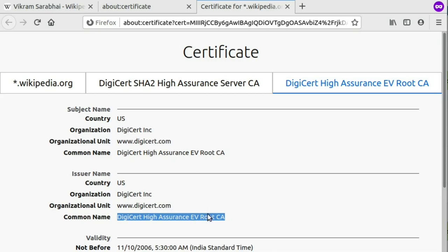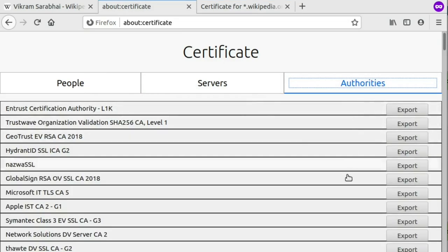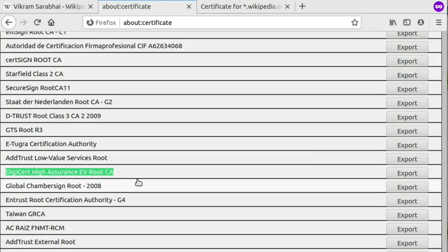Now we look at the list of authorities that the Firefox browser trusts, which is also known as Firefox's certificate store. And we see that the main root CA is present.